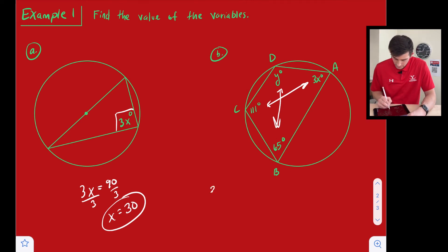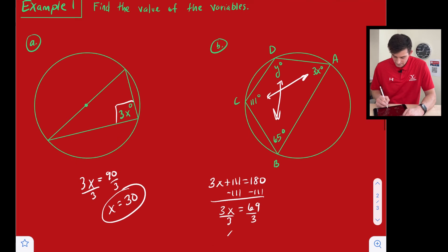All right, so we're going to say 3X plus 111 is equal to 180. So we can subtract 111 from both sides. We get 3X equals 69. Divide both sides by three, and that's going to give us X is equal to 23.